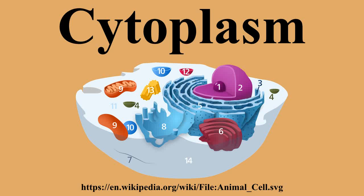Cytoplasmic inclusions are small particles of insoluble substances suspended in the cytosol. A huge range of inclusions exist in different cell types and range from crystals of calcium oxalate or silicon dioxide in plants, to granules of energy storage materials such as starch, glycogen, or polyhydroxybuterate. A particularly widespread example are lipid droplets, which are spherical droplets composed of lipids and proteins that are used in both prokaryotes and eukaryotes as a way of storing lipids such as fatty acids and sterols. Lipid droplets make up much of the volume of adipocytes, which are specialized lipid storage cells, but they are also found in a range of other cell types.